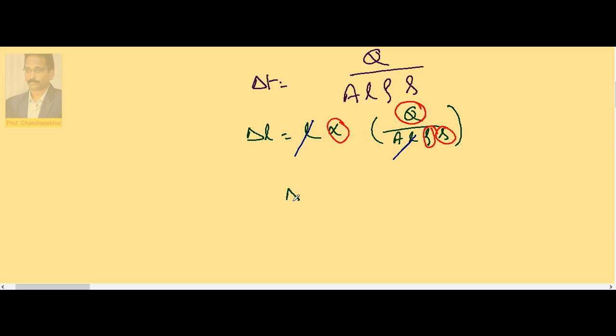So remaining delta L is inversely proportional to area. If the thickness is more, expansion will be less. Thickness less, expansion is more.